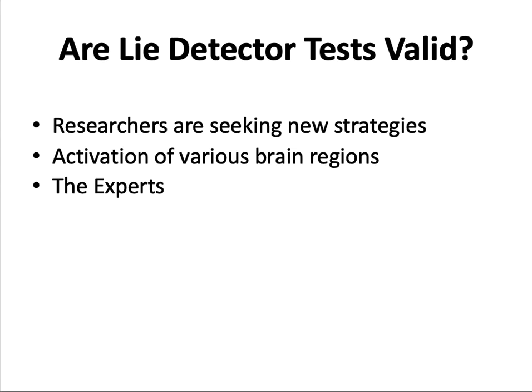Researchers are seeking new strategies to uncover deception. Numerous studies using EEG and fMRI have detected differences in brain activity when people are lying versus telling the truth. However, whether the activation of various brain regions indicates genuine deception or simply reflects other cognitive processes is currently unknown. A team of neuroscience experts highlighted several methodological problems with fMRI research to detect deception and raised additional ethical issues — such as privacy — that need further consideration before fMRI is ready for the courtroom.